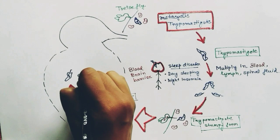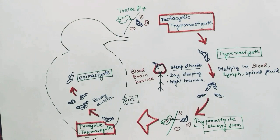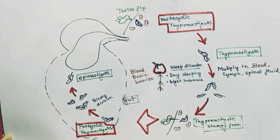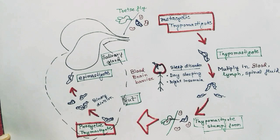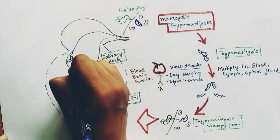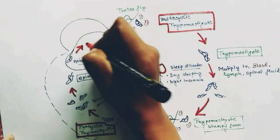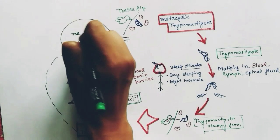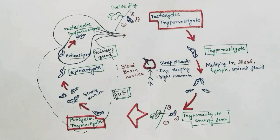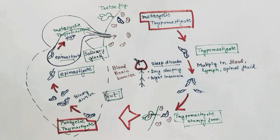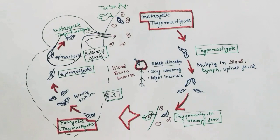After that stage, it transforms into the epimastigote. The position of the flagellum is slightly different in the epimastigote. The epimastigote moves from the gut to the salivary gland, where it attaches to the salivary gland wall using its flagellum. It then transforms into the metacyclic trypomastigote, which is the infective form. When this fly sucks a new human, it transfers the metacyclic trypomastigote, completing the life cycle.